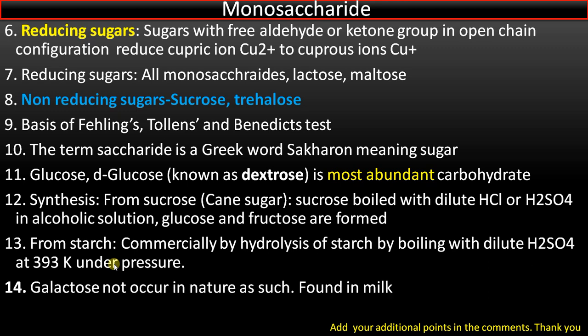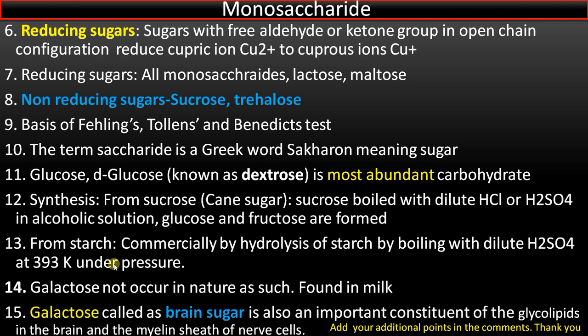Point number fourteen: galactose does not occur freely in nature; it is found in milk as a component of the disaccharide lactose. Point number fifteen: galactose is also called brain sugar, as it is an important component of glycolipids in the brain and the myelin sheath of nerve cells.